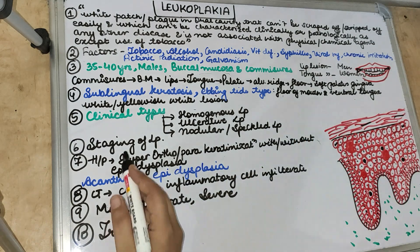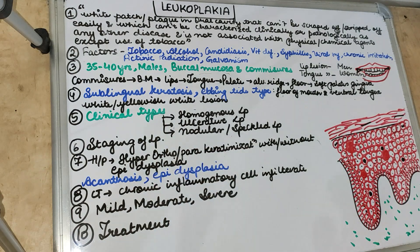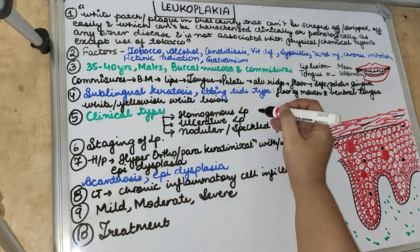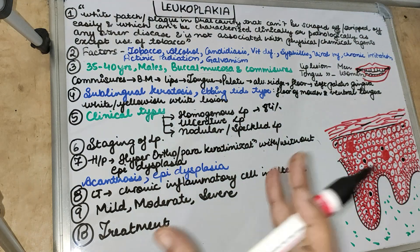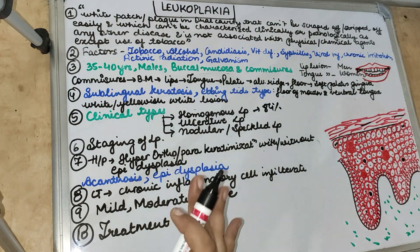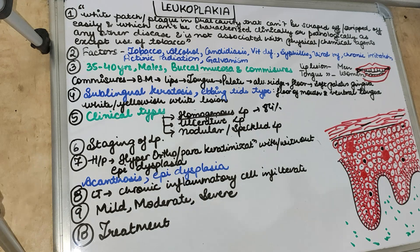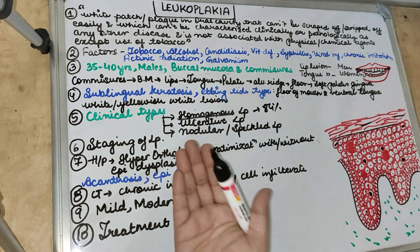The clinical types are: homogeneous leukoplakia, ulcerative leukoplakia, and nodular or speckled leukoplakia. The homogeneous type, also called leukoplakia simplex, is the most common — about 84% of cases. It is seen in clay pipe smokers and betel/liquid chewers. There is no red component — only a white patch with a corrugated surface with fine lines or wrinkles, presenting as a raised white plaque.